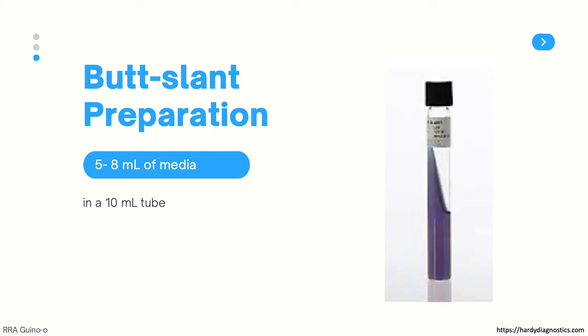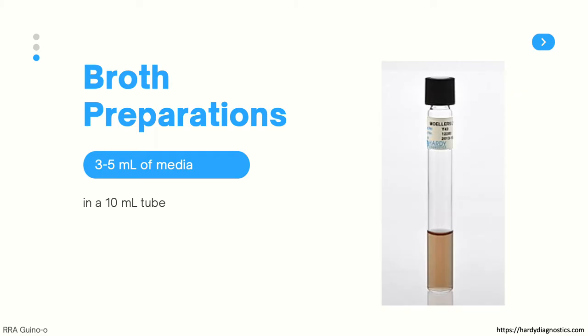Next we have the butt slant preparation. In comparison to the pure slant, this kind of preparation has a slant part on the top and a thick layer of agar on the bottom of the tube, which we call the butt. Usually tubes contain 5 to 8 ml of media in a 10 ml test tube. The last type is broth preparations, which contain 3 to 5 ml of media placed in a 10 ml tube.